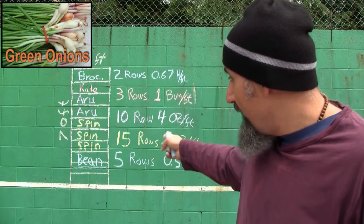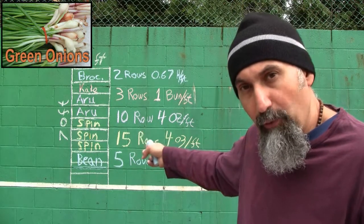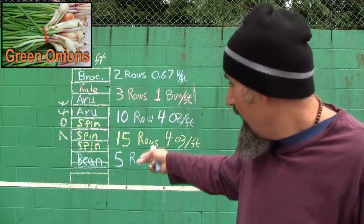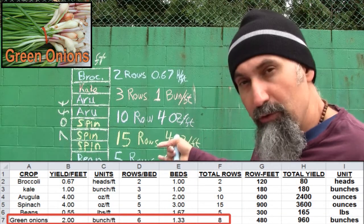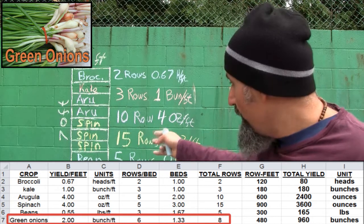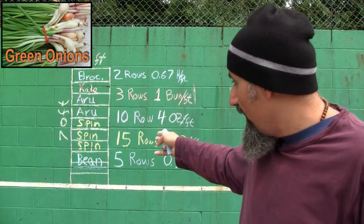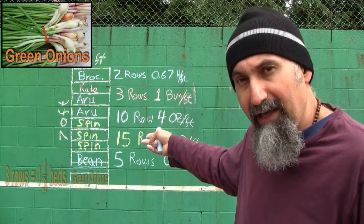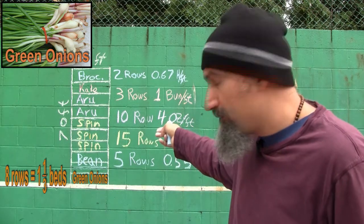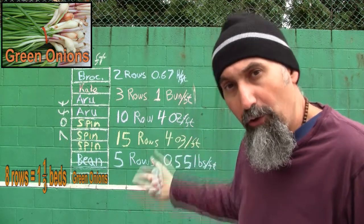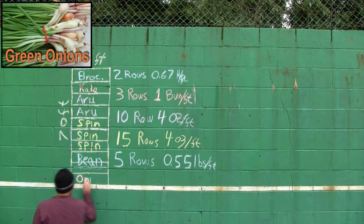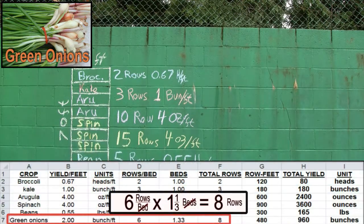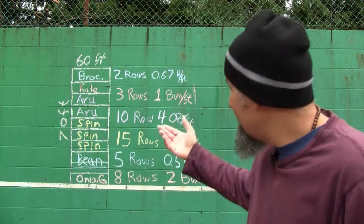The last thing we're going to plant is green onions in bed number ten and the remaining third of bed number nine. For green onions, you can put six rows into one bed. With a third of bed nine left, we can put two more rows there, giving us a total of eight rows of green onions. The yield for green onions is two bunches per foot.